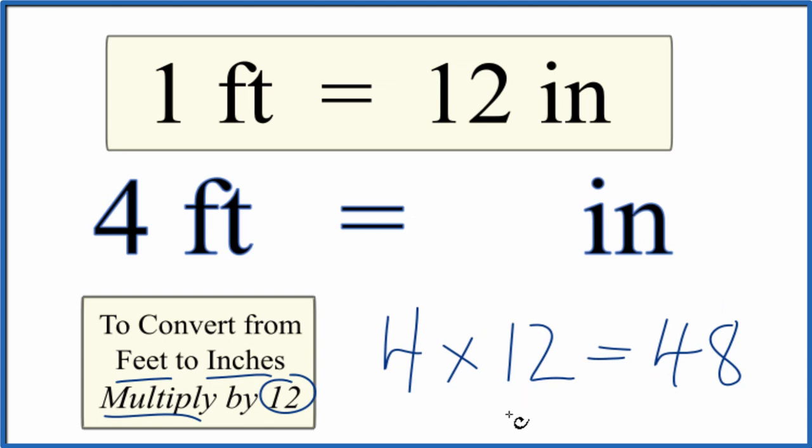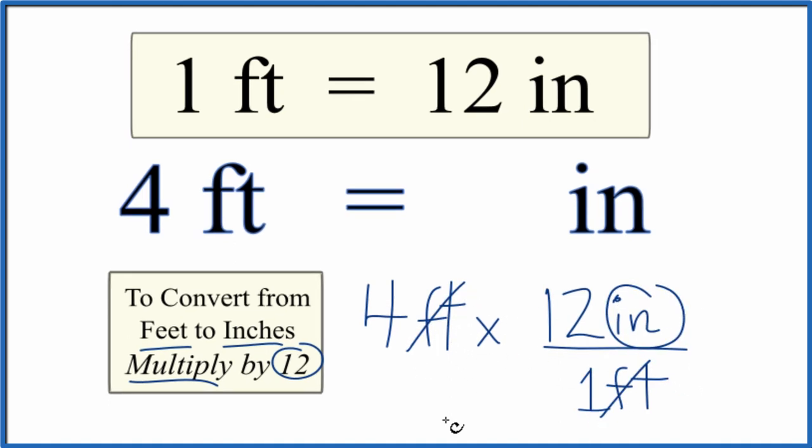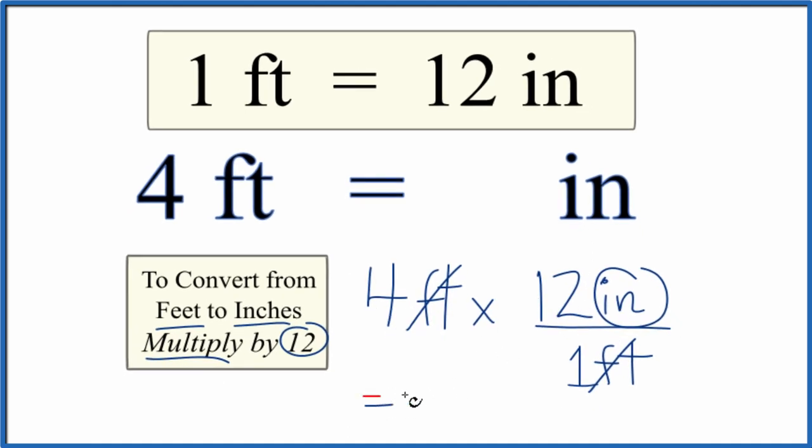Let's do this with the units so you can see how they cancel out. So we start with 4 feet and we're going to multiply by 12. But that's 12 inches, and there are 12 inches in 1 foot. So we multiply. We have feet on the top and bottom that cancel out. That leaves us with inches. So 4 times 12 inches equals 36 inches.